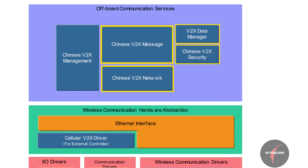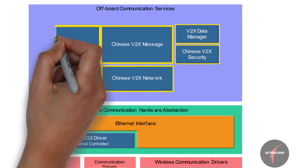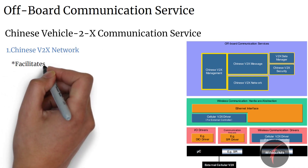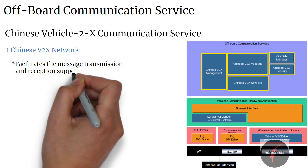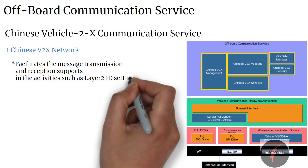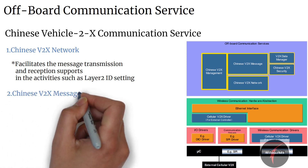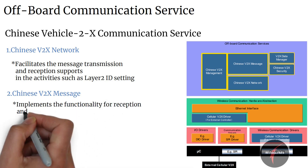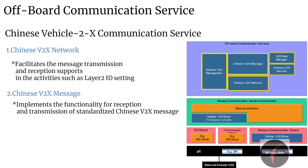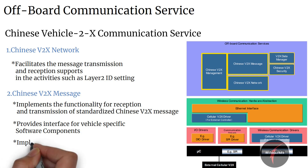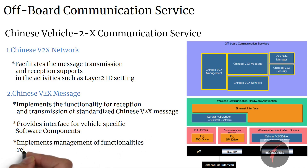Chinese Vehicle-to-X Network facilitates message transmission and reception, and supports activities such as layer-2 ID setting, etc. Coming to Chinese Vehicle-to-X Message, this module implements the functionality for reception and transmission of standardized Vehicle-to-X messages, provides the interface for vehicle-specific software components, and also implements management of functionalities related to vehicle message layers such as sending frequency, position and time, message identifiers, etc.